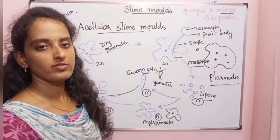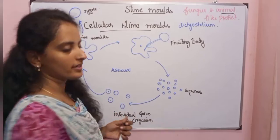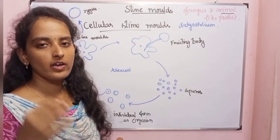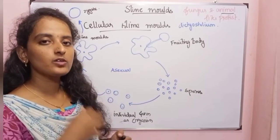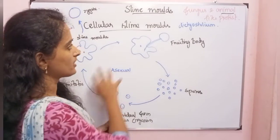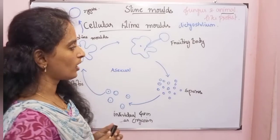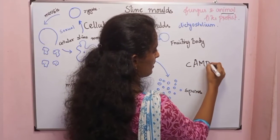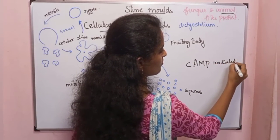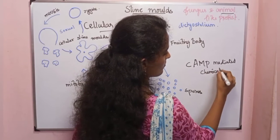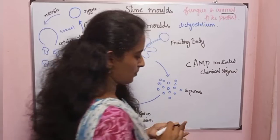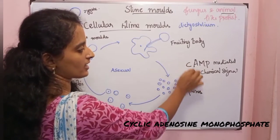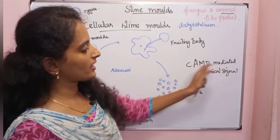Now for the cellular slime mold life cycle. Cellular slime molds start as solitary organisms. When food is scarce, they aggregate using a CAMP (cyclic adenosine monophosphate) mediated chemical signal to come together and form a colony.